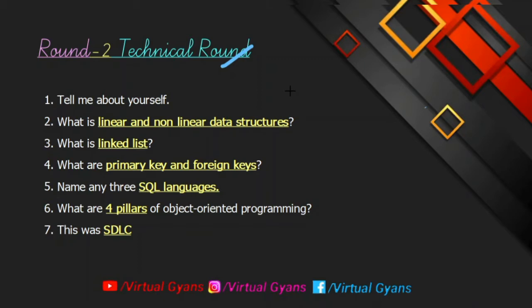In the DBMS section, they can ask questions like primary key, foreign key, and many other types of keys. The keys topic is very important from an interview point of view. They can also ask SQL language questions — for example, write a query for a specific task and run it in the Oracle server.